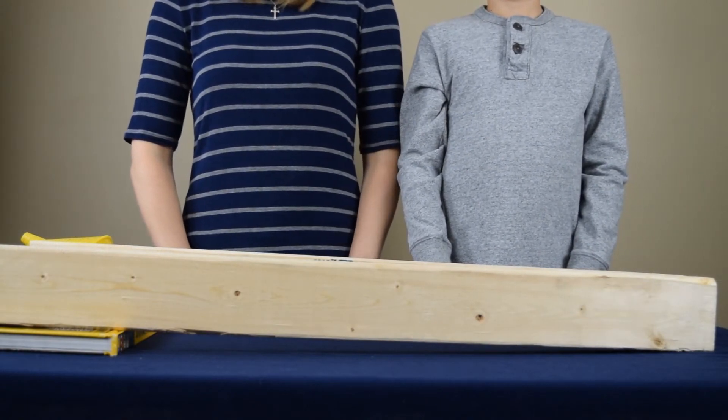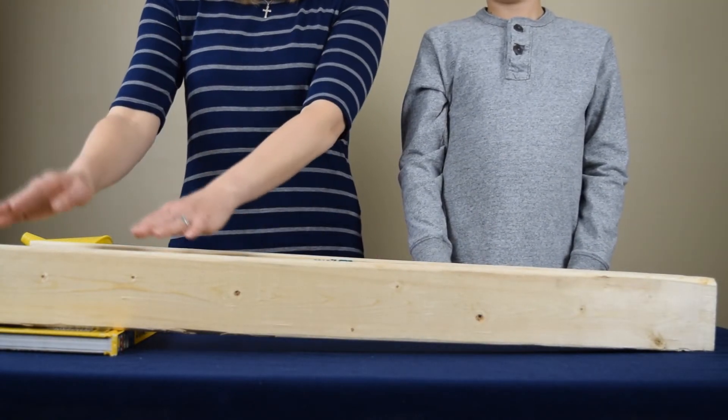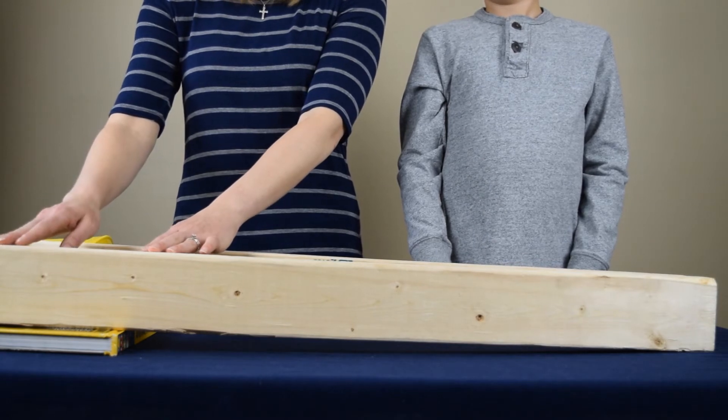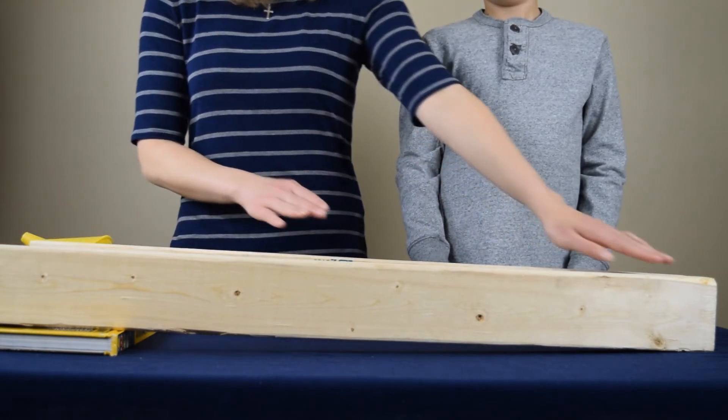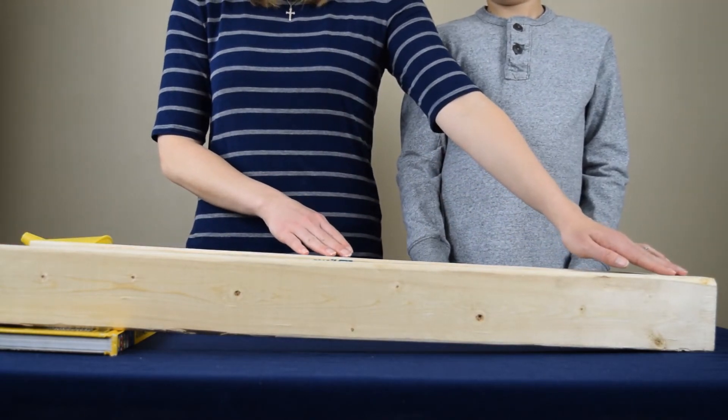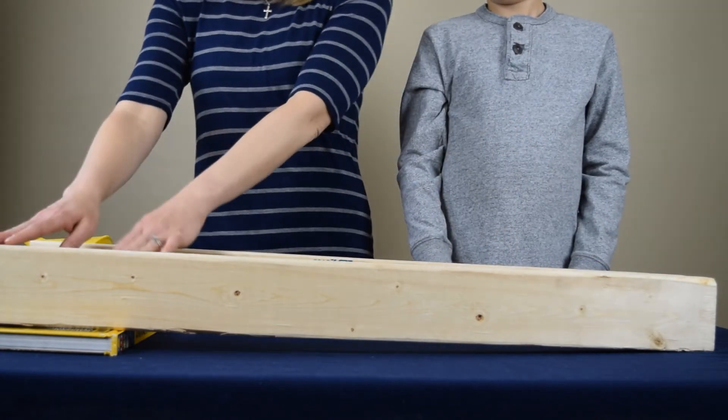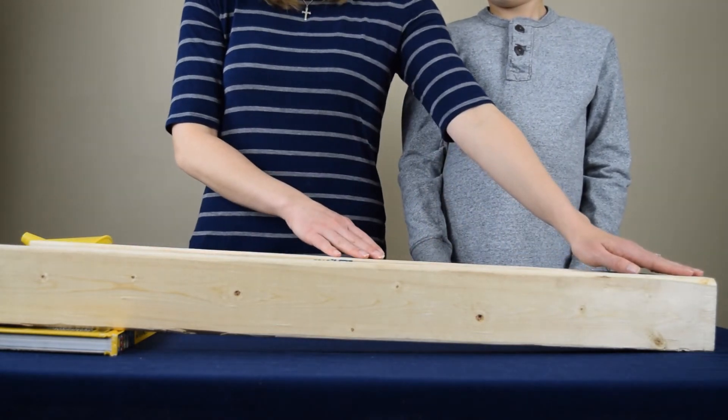Now that we're looking at the board from the side again, you can clearly see that the part of the boards that are resting on the book are higher than the part of the boards that are resting on the table. Because of that, this is the top of our hill and this is the bottom of our hill.